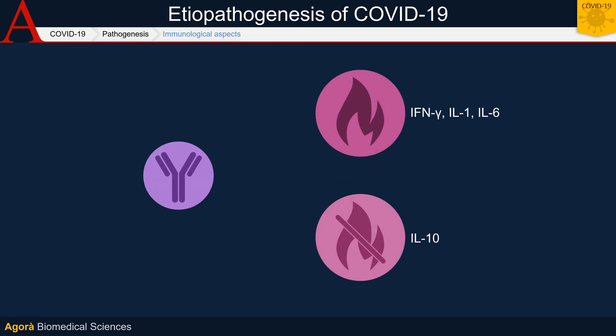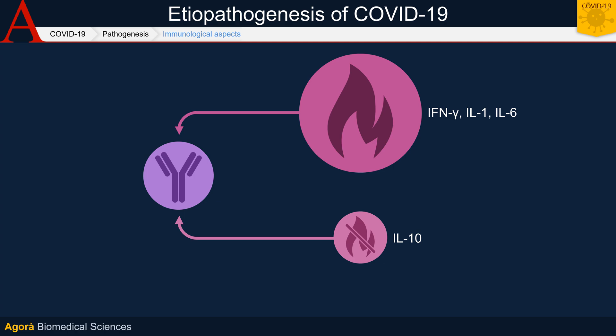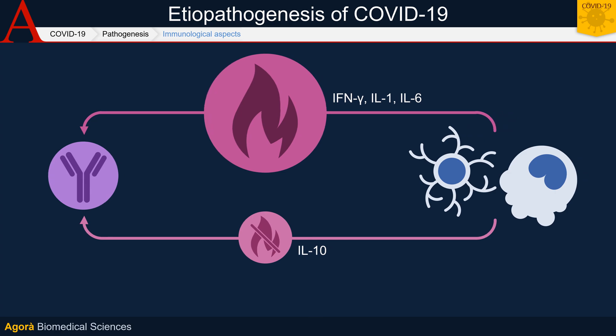Studies on patients with SARS and MERS have shown that infected patients with more severe clinical pictures and higher risk of death had higher blood levels of pro-inflammatory cytokines — IFN-gamma, IL-1, IL-6 — and lower levels of IL-10, one of the main anti-inflammatory cytokines, compared to patients with a milder picture. When studying the behavior of immune cells responsible for the production of these cytokines — dendritic cells and macrophages — as well as the infected respiratory epithelium cells themselves, it was seen that the production of cytokines was delayed and excessive.